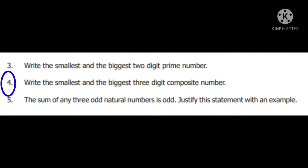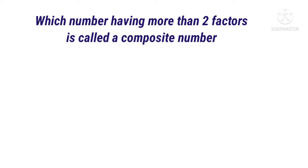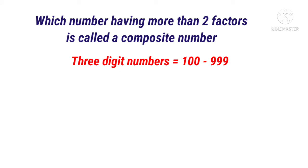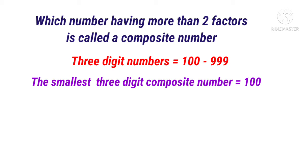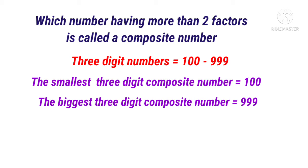Fourth sum: write the smallest and the biggest 3-digit composite number. A number having more than 2 factors is called a composite number. 3-digit numbers range from 100 to 999. The smallest 3-digit composite number is 100, because 3-digit numbers start from 100. The biggest 3-digit composite number is 999.